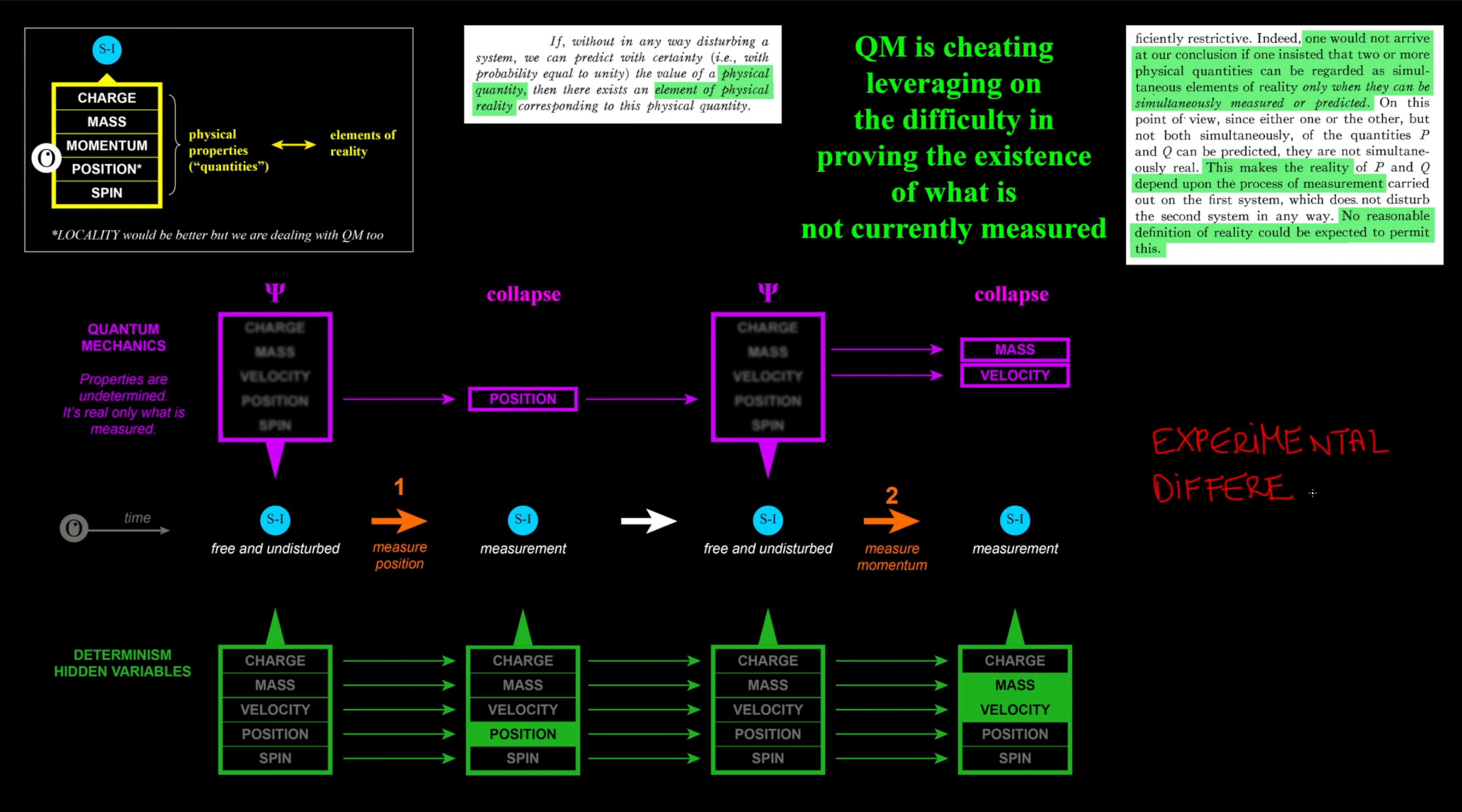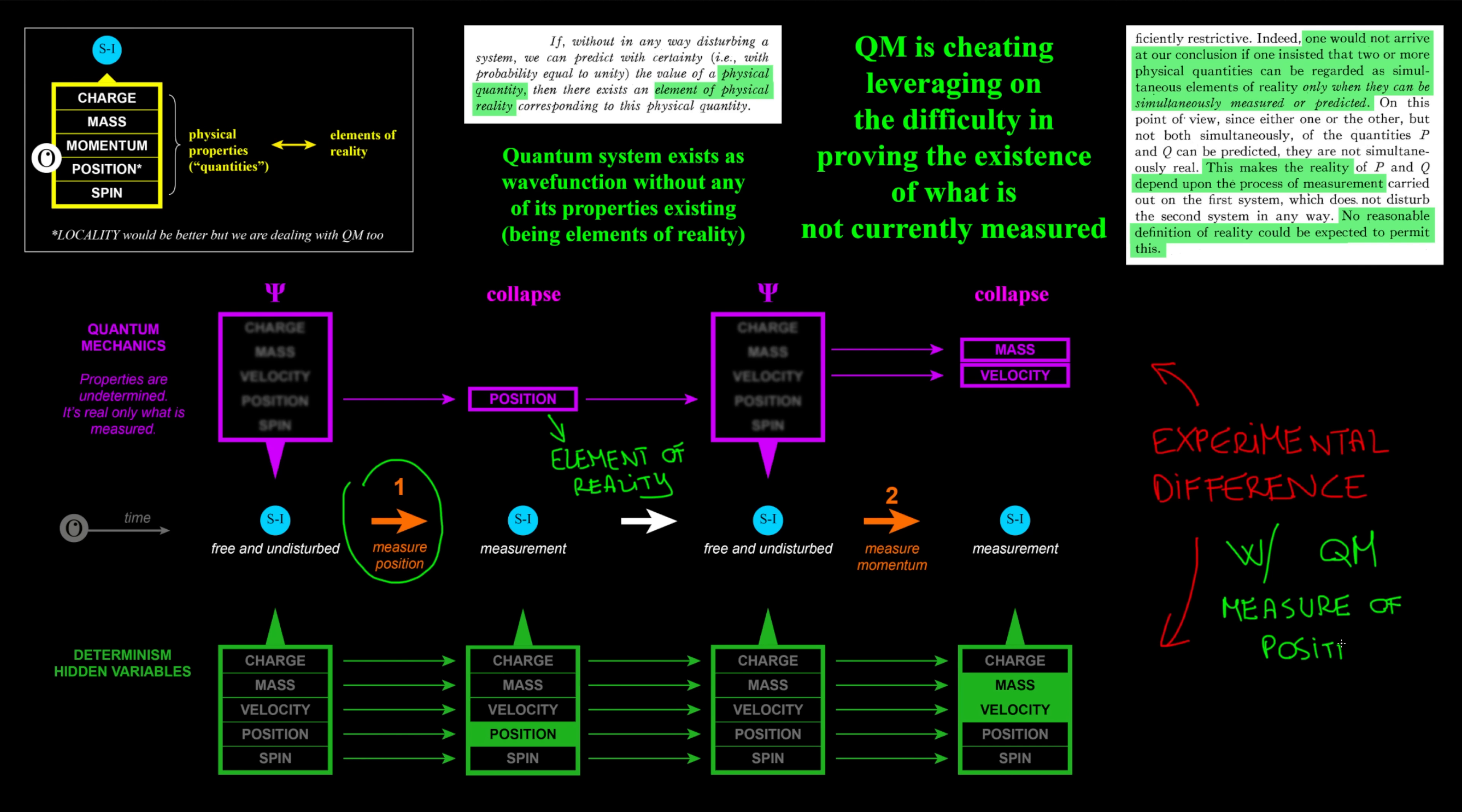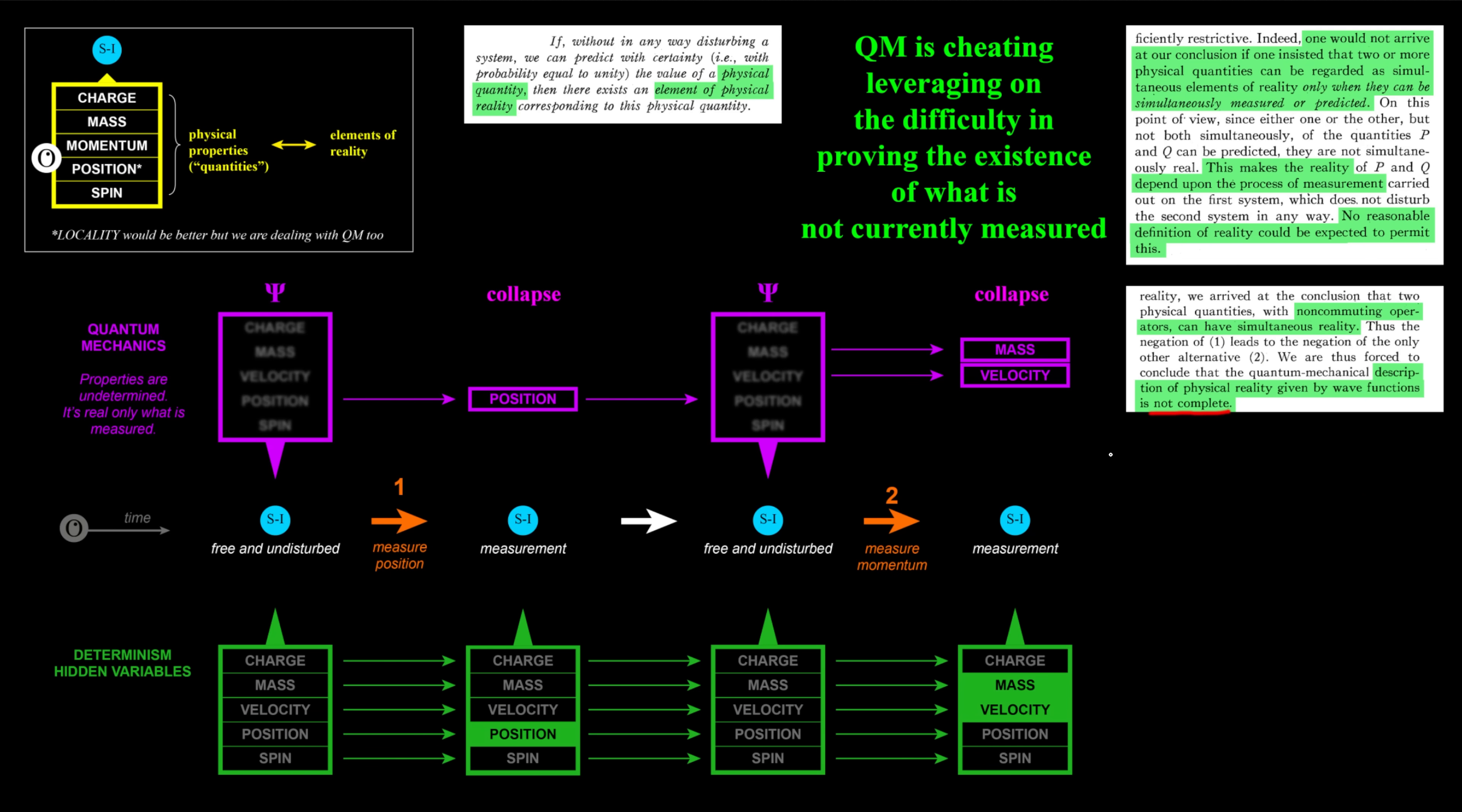Actually, there should be an experimental difference between the two models. When I measure position with quantum mechanics, the only element of reality is position. So it follows that in quantum mechanics, measurement of position cannot affect the following velocity of the system because velocity doesn't exist. This means that the second measurement in quantum mechanics differs from determinism, since in determinism velocity, as all other properties, is always an element of reality. Only with hidden variables, measurement of position can affect the velocity even when it's not measured.